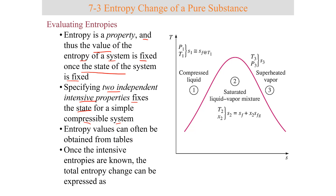Entropy values can often be obtained from those tables, and once the properties are known — once you know the entropy at state one and the entropy at state two — you can easily find the change in entropy of a system.